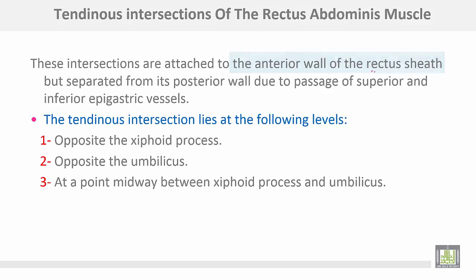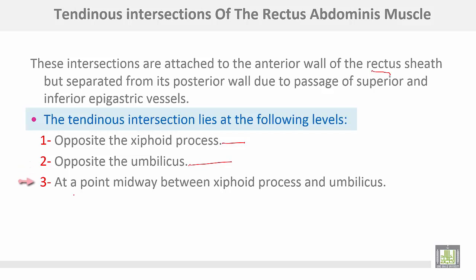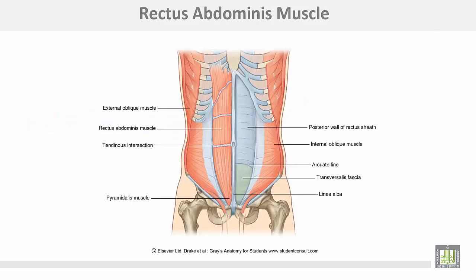The tendinous intersections of the rectus abdominis muscle are attached to the anterior wall of the rectus sheath but separated from the posterior wall, due to the passage of the superior and inferior epigastric vessels. The tendinous intersections lie at the following levels: one opposite the xiphoid process, the second opposite the umbilicus, and the third at the midpoint between the xiphoid process and the umbilicus. The rectus abdominis is subdivided by these intersections and attached to the anterior of the rectus sheath but separated from the posterior wall.